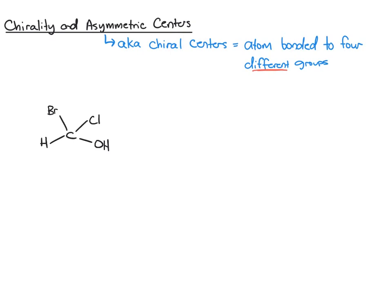So if we look at this and look at the groups around the carbon, you have a hydrogen, an OH, a Cl, and a Br. Those are, of course, four different things. So that particular carbon is bonded to four different groups. That's a chiral center. And we often denote that with an asterisk on the atom.